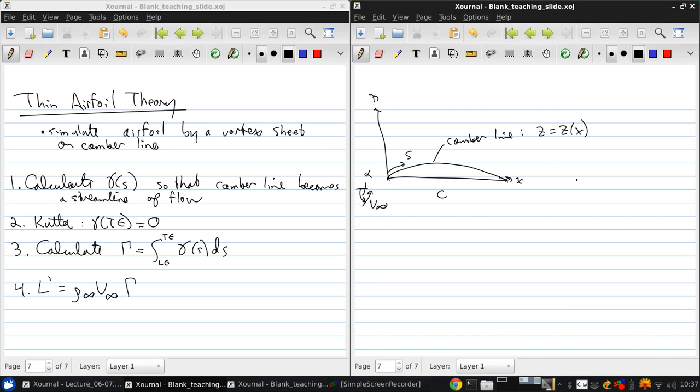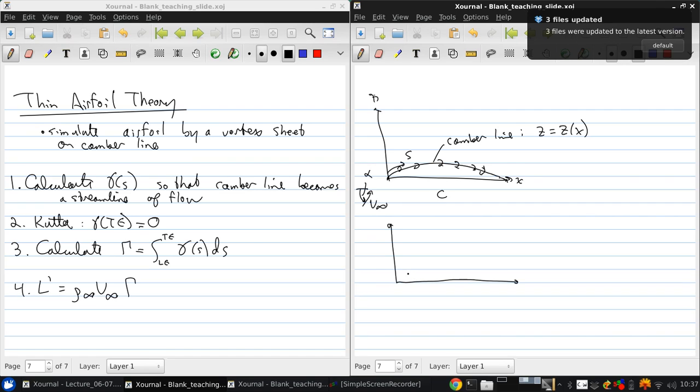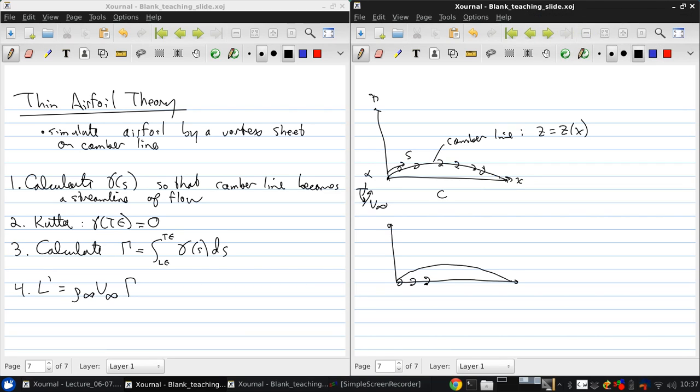So for a thin airfoil, the camber line is relatively close to the cord line. So you can think about, if we zoomed out a little bit, you could actually not have things change too much by moving the vortex sheet directly onto the cord line. So instead of having vortices on the camber line, we still have the same camber line, but now the vortex sheet is a straight sheet along the cord line. So the gamma is now a function of x instead of s.